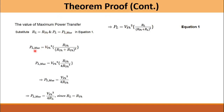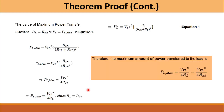By evaluating this expression, the maximum power absorbed by the load is equal to V_Thevenin squared divided by 4R_L. This is the expression for the maximum power absorbed by the load.